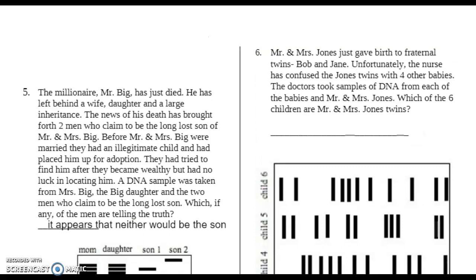Number 6. Mr. and Mrs. Jones just gave birth to fraternal twins, Bob and Jane. Unfortunately, the nurses confused the Jones twins with four other babies. The doctors took samples of DNA from each of the babies and Mr. and Mrs. Jones. Which of these six children are Mr. and Mrs. Jones twins?